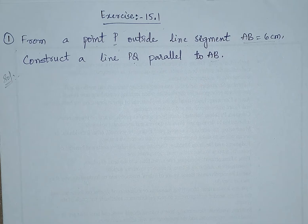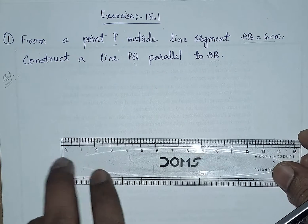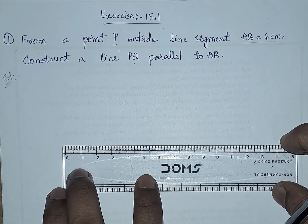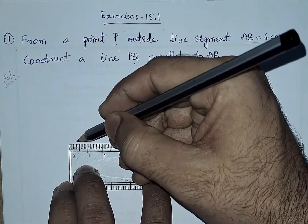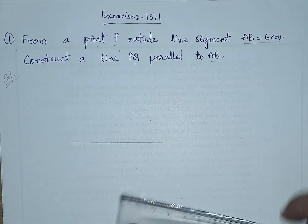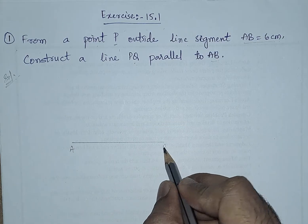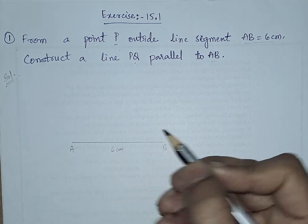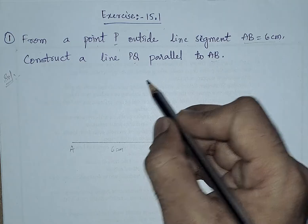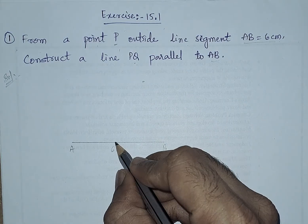First, I am going to draw a line AB which is 6 centimeters. So this is 6 centimeters. AB is a 6 centimeter line segment. Let us take any other point, so let this be a point P.